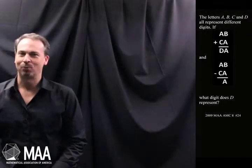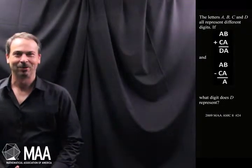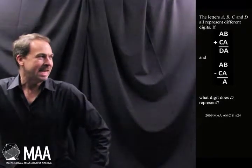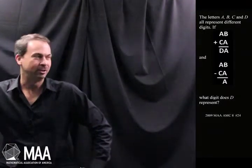G'day! Here's a charming problem for the middle school math crowd. It goes as follows. The letters A, B, C and D all represent different digits.